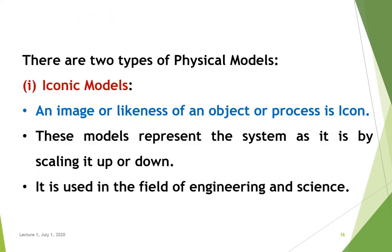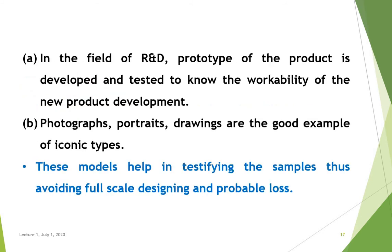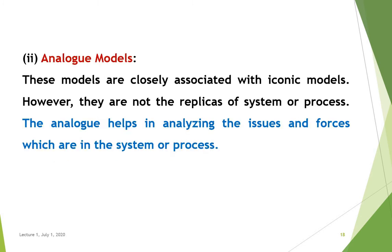There are two types of physical models. The first one is iconic models. An image or likeness of an object or process is an icon. These models represent the system as it is by scaling it up or down, and are used in the field of engineering and science. In research and development, a prototype of the product is developed and tested to know the workability of a new product. Photographs, portraits, and drawings are good examples of iconic types. These models help in testing samples, thus avoiding full-scale designing and probable loss, thereby reducing risk.